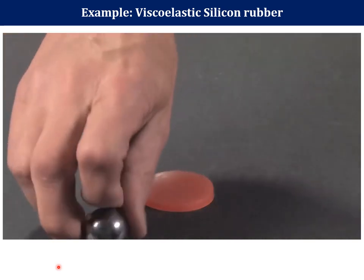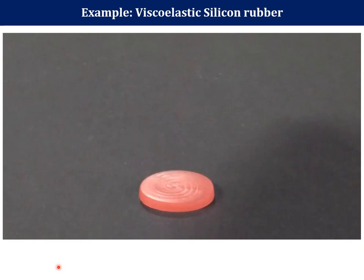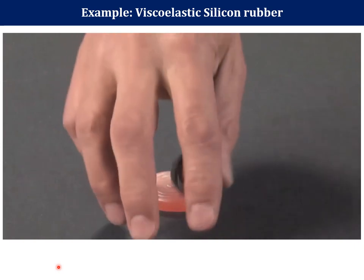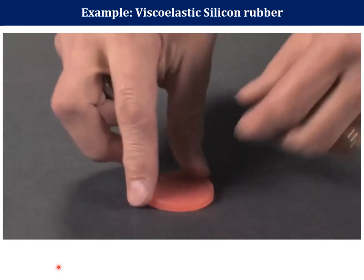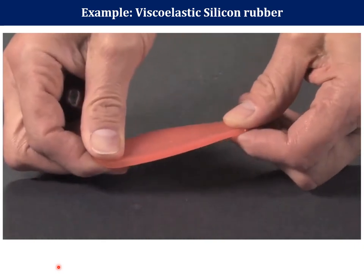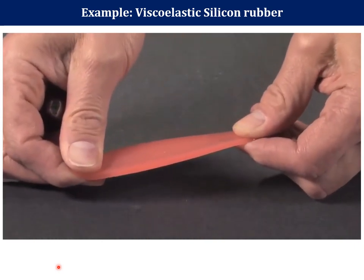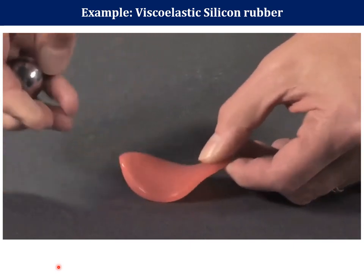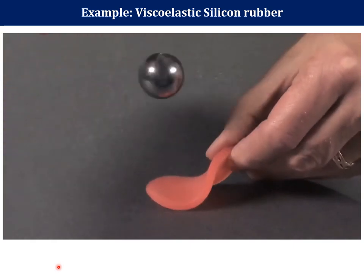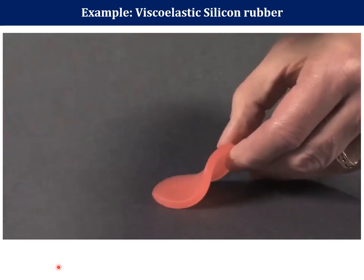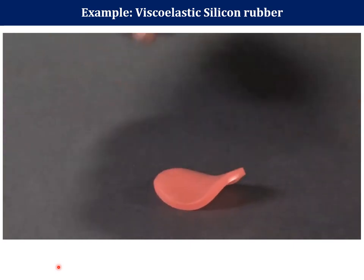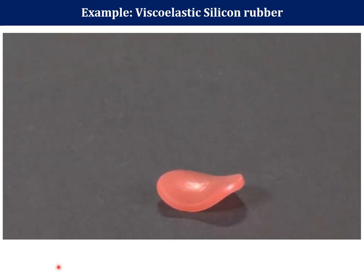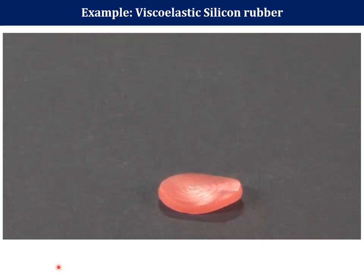Viscoelastic silicone rubber is bouncy, and even when you deform it slowly into a new shape, it's still bouncy as it slowly returns to its original shape.